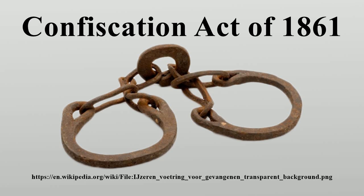Lincoln gave Attorney General Edward Bates no instructions on enforcing the bill. Few confiscations occurred. With respect to slaves, the Act authorized court proceedings to strip their owners of any claim to them, but did not clarify whether the slaves were free. As a result of this ambiguity, these slaves came under Union lines as property in the care of the U.S. government.